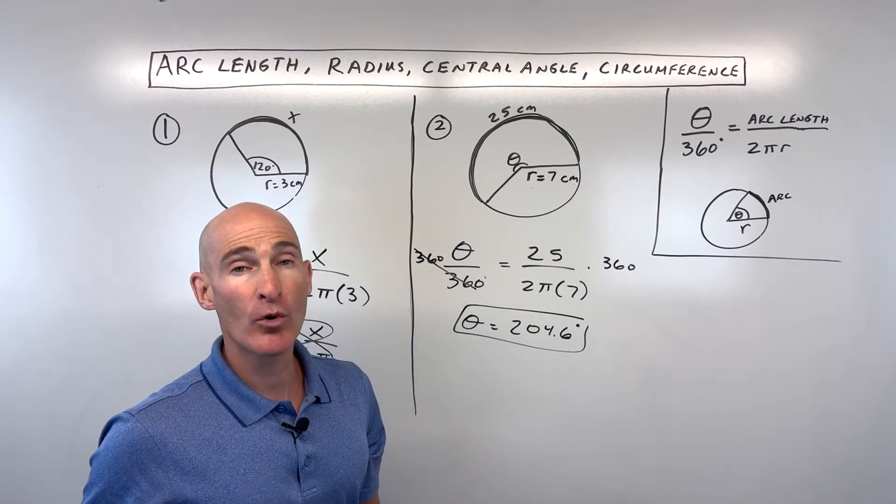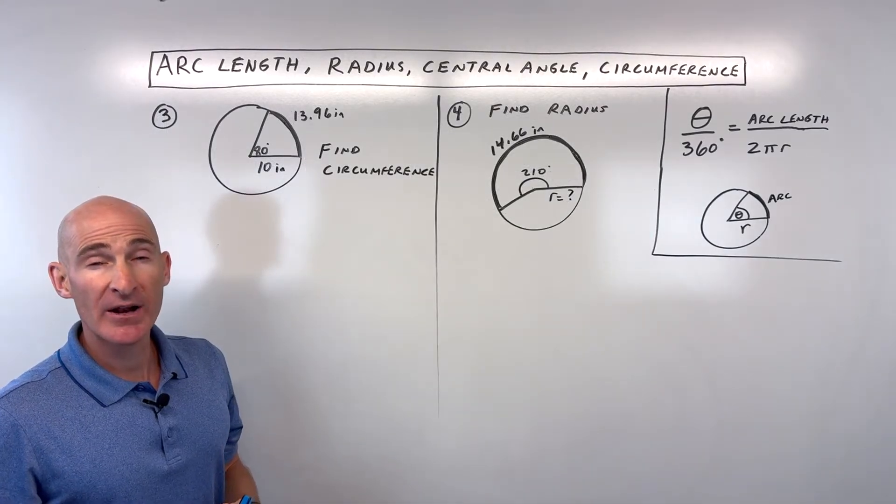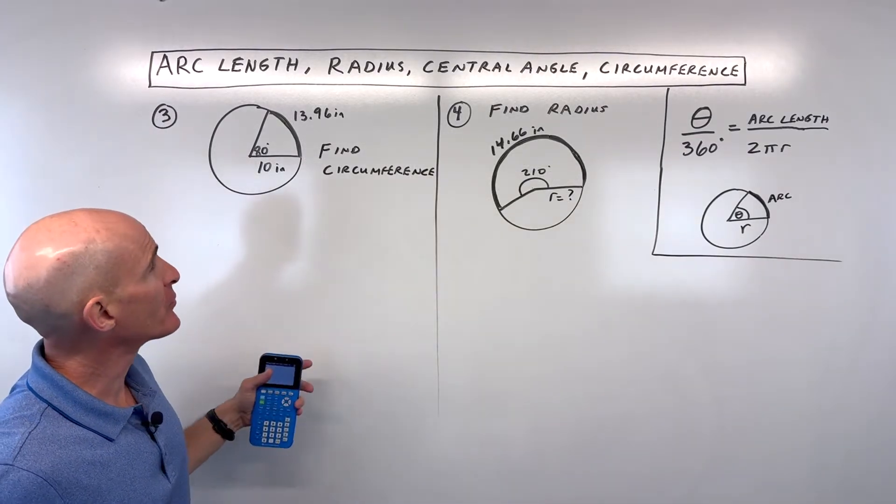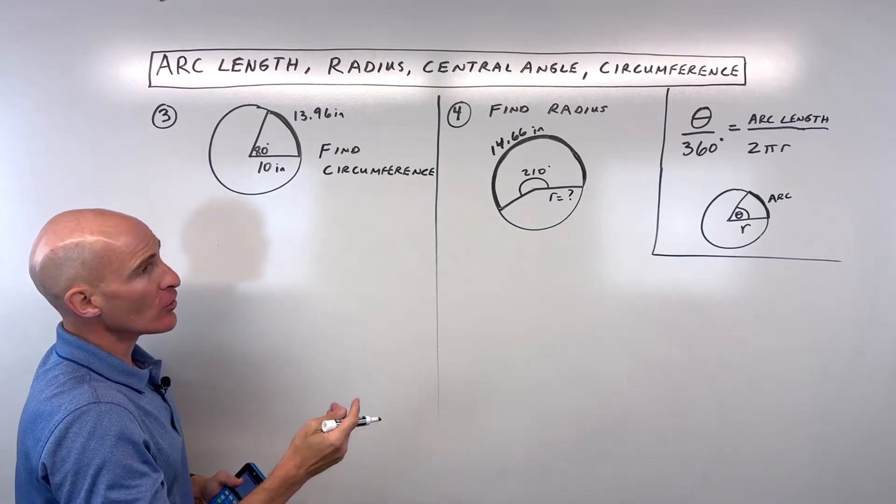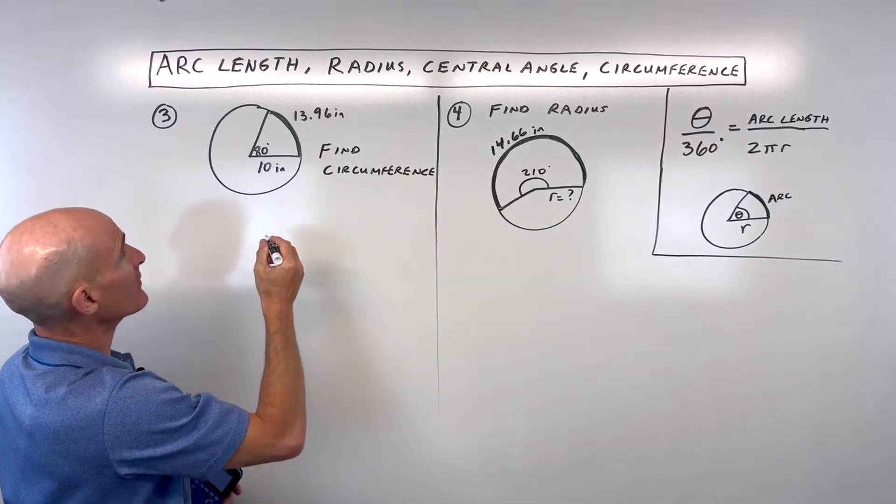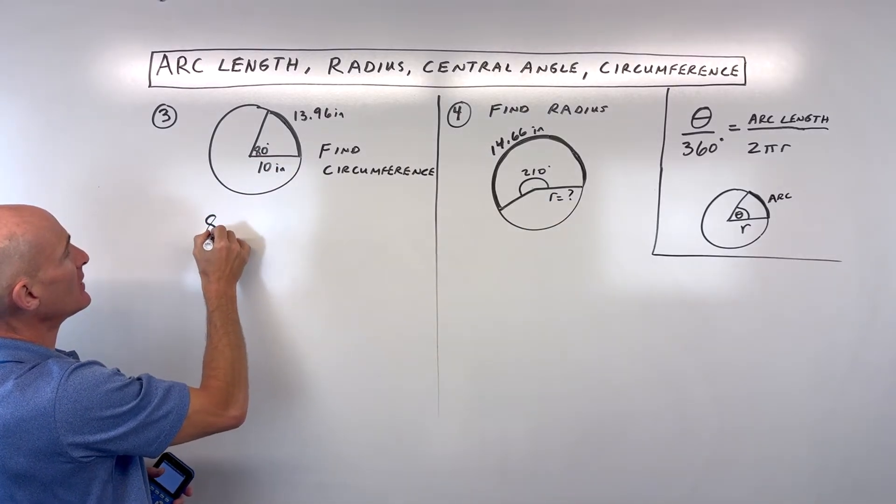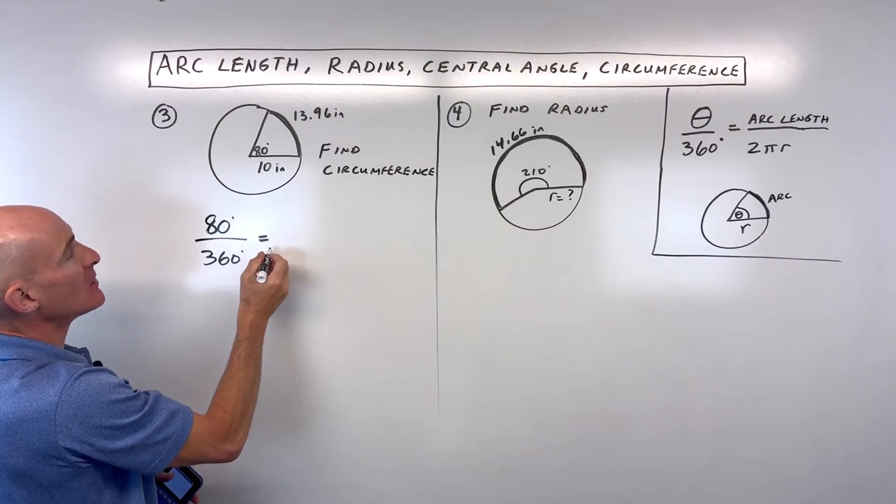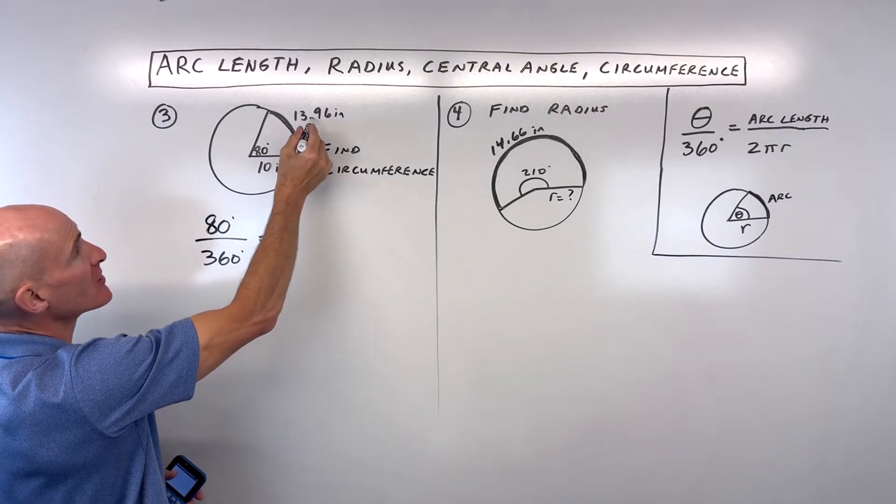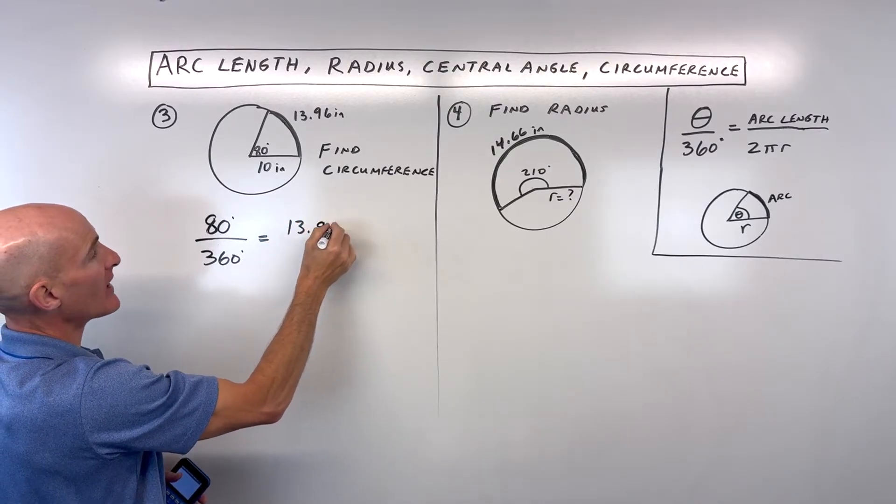Let's take a look at two more examples. If you feel like you're getting the hang of this, try number 3 and 4. For number 3 now, we're going to find the circumference of this whole circle. So going back to our formula here, we've got theta, which is 80 degrees, so 80 divided by 360, equals the arc length, which they're giving us to be 13.96 inches, divided by 2πr.